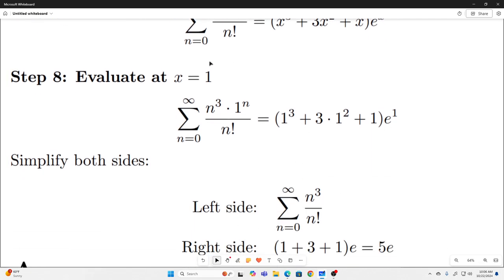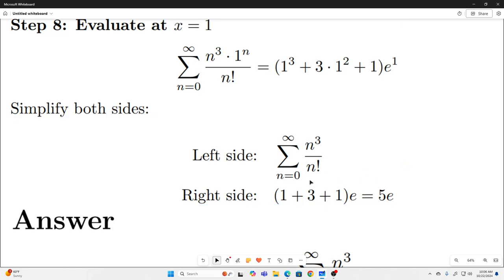And we end up with this. So if we simplify this, all we end up with on the left-hand side is n cubed over n factorial. That's exactly what we wanted to find.